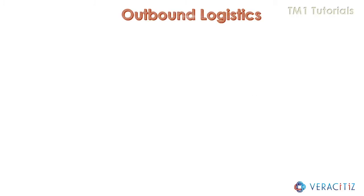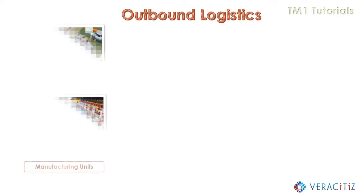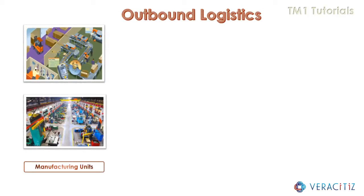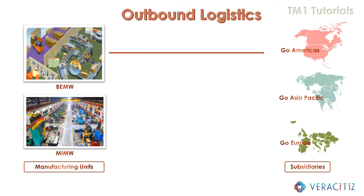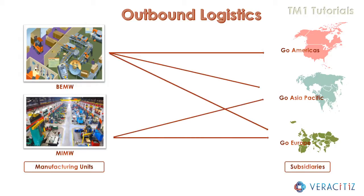Let's take an example to understand the challenges faced in managing outbound logistics. Here we have two manufacturing units, namely BMW and MIMW. These units would manufacture products and cater to various subsidiaries like Go Americas, Go Asia Pacific, and Go Europe. The question arises: how to explore the valid routes from all these available combinations such that it will yield maximum contribution to the company?